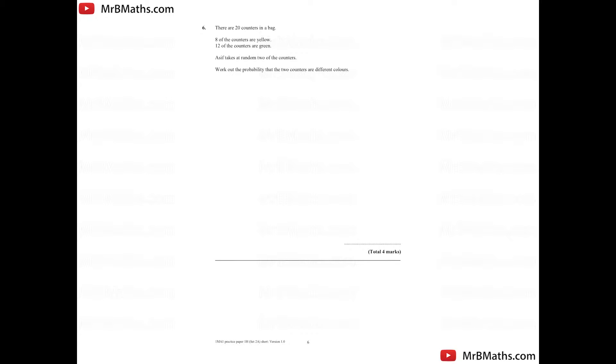So I'm going to start off with our probability tree because it's going to be 2 events. So if I start here, I've got yellow and then green. So if I go for the yellow route, there's a total of 20 counters. If I go for the yellow route, this will be an 8 out of 20 chance. If I go for the green route, it will be a 12 out of 20. So this here is my first selection.